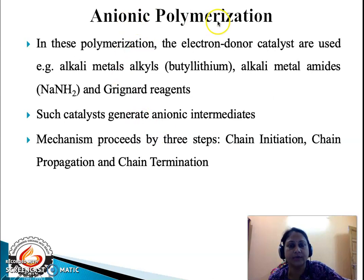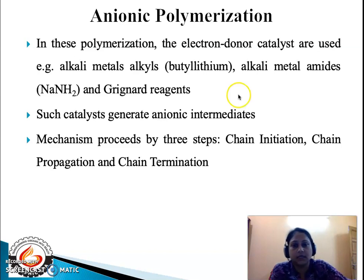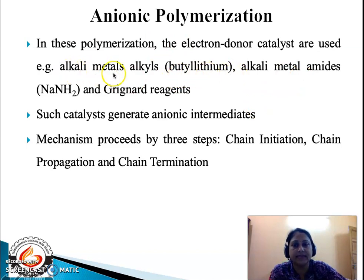Now let us come to anionic polymerization. Under anionic polymerization, the monomer units, besides containing a double bond or triple bond, must have an electron-attracting substituent, meaning they are easily attacked by nucleophiles. The nucleophiles are electron-rich species and serve as initiators. Usually butyl lithium or ethyl lithium — that is, alkali metal alkyls — along with alkali metal amides and Grignard's reagent are the initiators. These initiators attack the monomers to give rise to carbanionic intermediates.